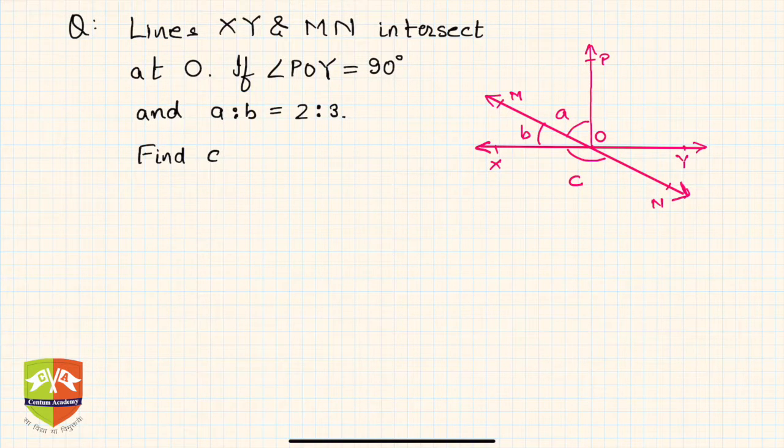So let's solve this problem. Lines XY and MN intersect. You can see there are two lines XY and MN, they intersect at point O.